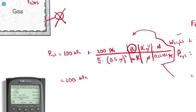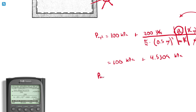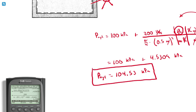Computing: 200 divided by the quantity pi over four times 0.5 squared, times 1000 times 0.22481. That works out to approximately 4.5309 kilopascals. Adding to the 100 kilopascals: 100 plus 4.5309 gives approximately 104.53 kilopascals.